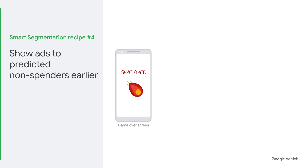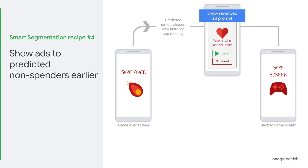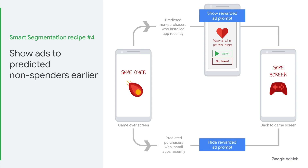Here's how it looks for rewarded ads. We'll use the same example as before, where you show an ad at the end of your game. If you know that a user has recently installed the app, you can only show an ad to predicted non-spenders who just recently installed the app. For predicted spenders who just installed the app recently, the rewarded prompt is hidden. Along with our third recipe, this recipe is a great example of the variety of variables you can play with using smart segmentation — different frequencies, timings, and much more.